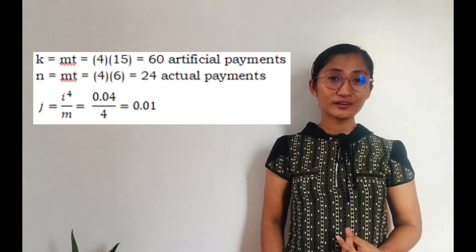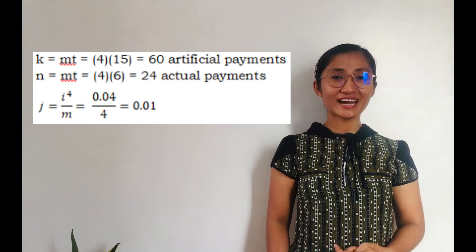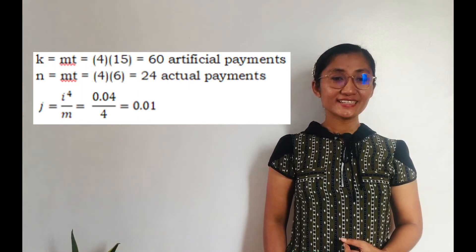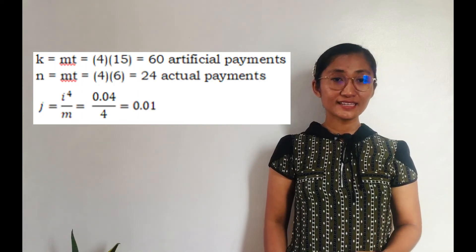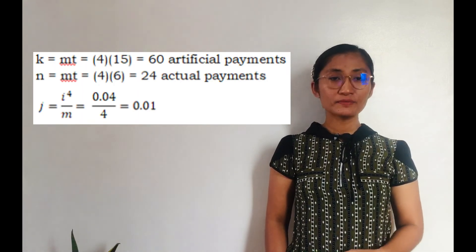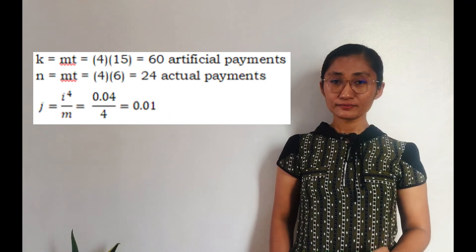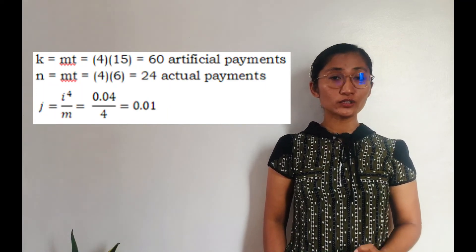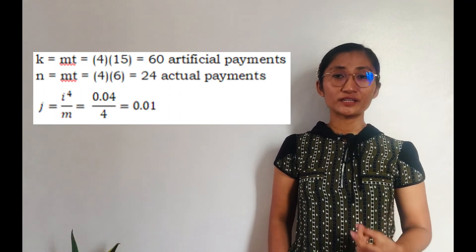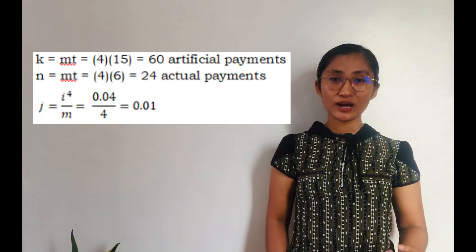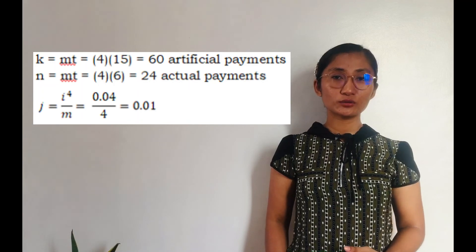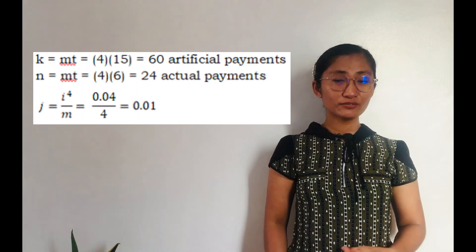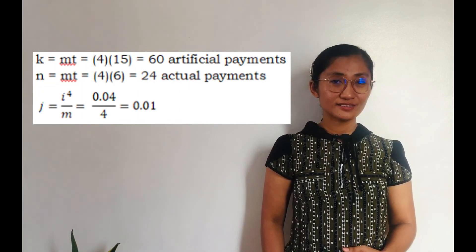How about for the actual payments? We have N equals MT. M again is 4 and T is 6. 4 times 6 is equal to 24 actual payments. How about for J? We have I to the fourth over 4 is equal to 0.04 divided by 4 is 0.01.